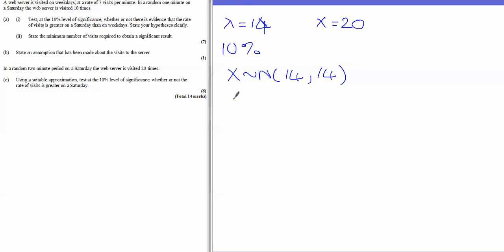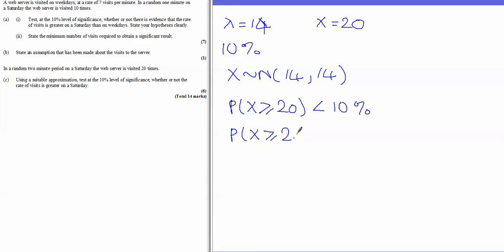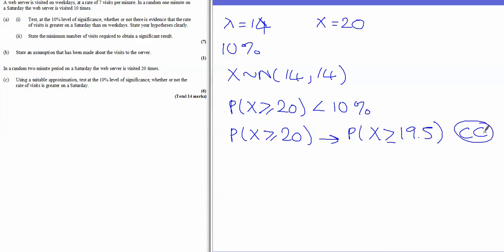We want to test whether X equals 20 is significant at the 10% level, so we need the probability of X being greater than or equal to 20. Applying the continuity correction, X greater than or equal to 20 (discrete) becomes X greater than or equal to 19.5 (continuous), because we take 0.5 below to include the value 20. This is our continuity correction.